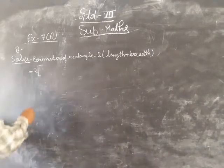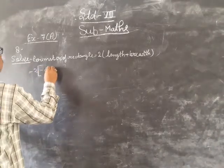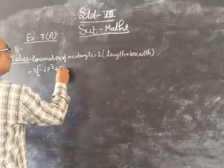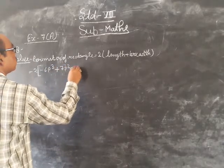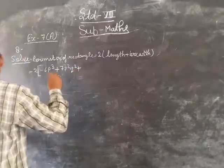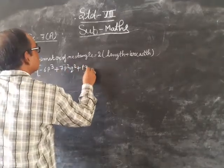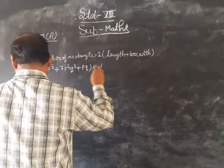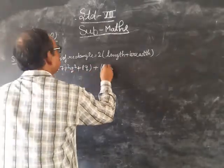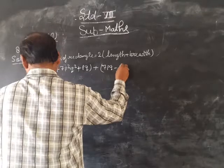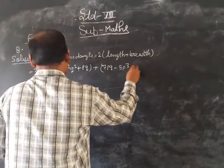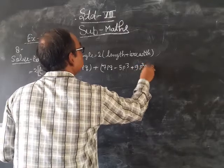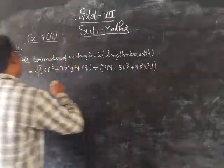Here we have minus 6p³ plus 7p²q² plus pq, which is the length, plus the breadth which is 7p cube minus 5p³ plus 9p²q².